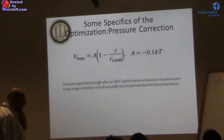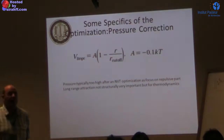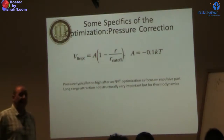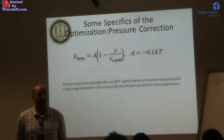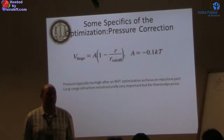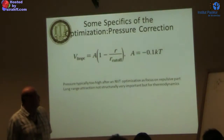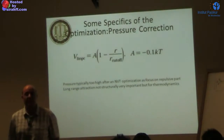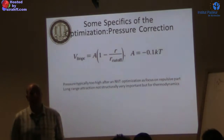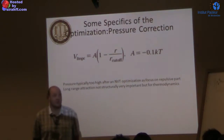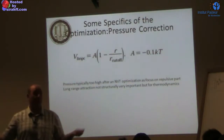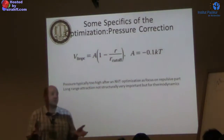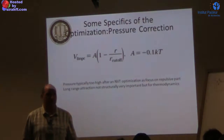Another thing I briefly mentioned yesterday is the effect of pressure correction. When you optimize the radial distribution function, you often find that the pressure in your coarse-grained simulation is much higher than expected. The reason is that the repulsive part of the interaction dominates the local structure, while the long-range attractive part has little effect on local packing but a huge effect on the thermodynamic pressure.